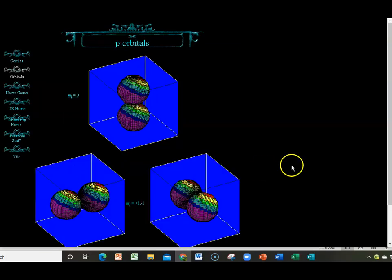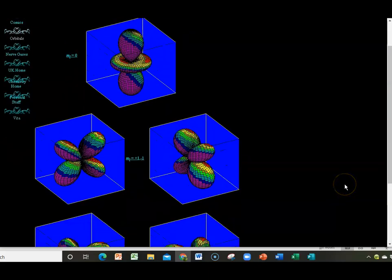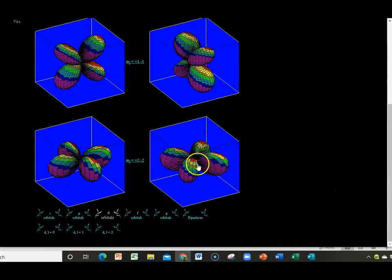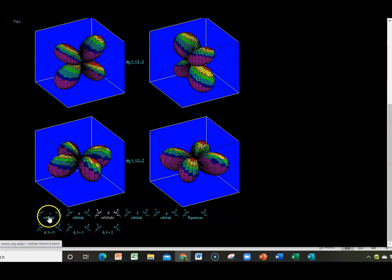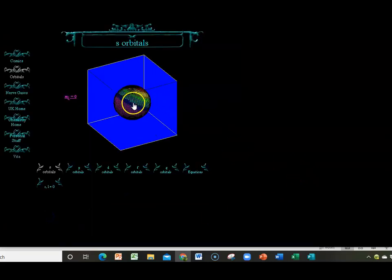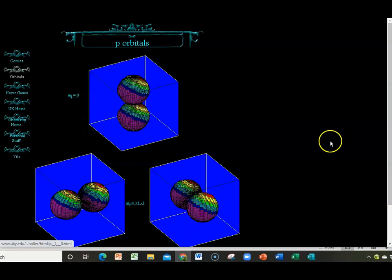Now for our purposes, we're really only going to be concerned with the S orbitals, the P orbitals, and the D orbitals. And again, what we're seeing here in these pretty colors is the probability of finding an electron in space. So if we go back to S, the probability of finding an electron is about 90% of the time it's in this region.